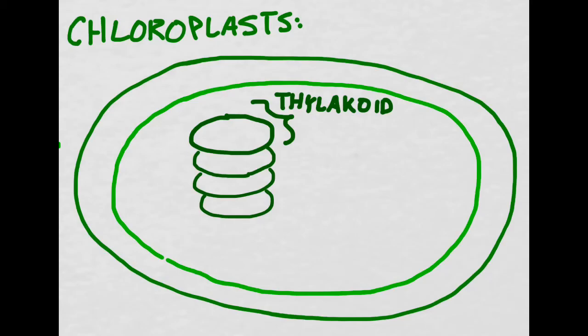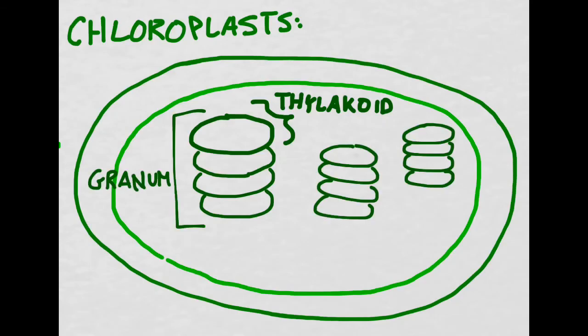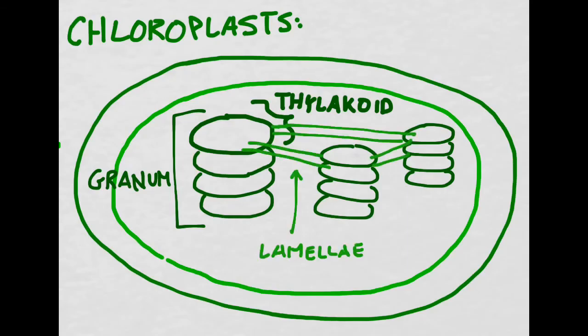There isn't just one thylakoid inside a chloroplast. That would be really inefficient to only have one site for the light-dependent reactions. There are actually stacks of thylakoids spaced throughout the chloroplast. Each one of these stacks is called a granum. If you have more than one granum, we call them grana, and they're connected together by a structure called lamellae, which is essentially a large membrane containing more chlorophyll.